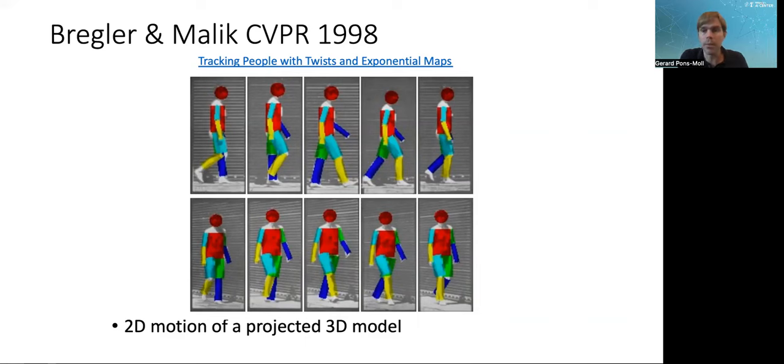Then the work by Bregler and Malik in CVPR '98 basically showed how to, was one of the first works that could differentiate through the observation to the likelihood with respect to the parameters. Here, what they did is to parameterize the optic flow with the parameters of the body model.